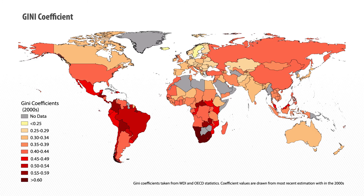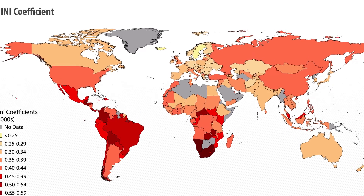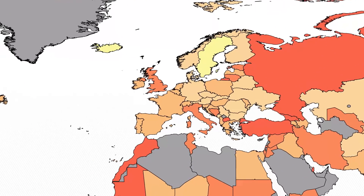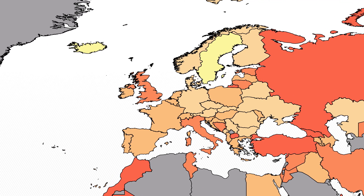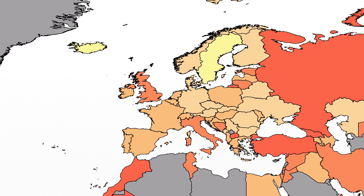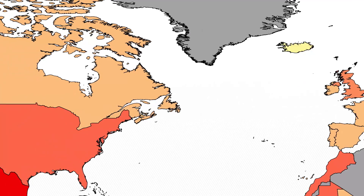The lowest inequality tends to be in Western Europe and especially in Scandinavia. Countries like Sweden, Norway, and Denmark tend to have a relatively equal income distribution — a broad middle class, not so many super rich and basically no super poor. On the map, the light shading of those countries indicates a quite low Gini coefficient.